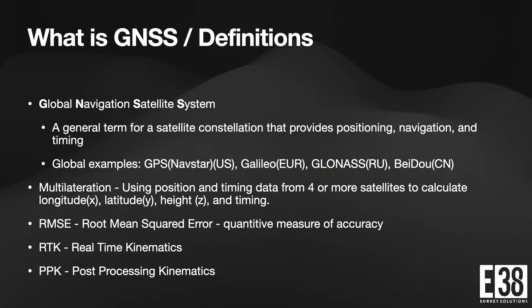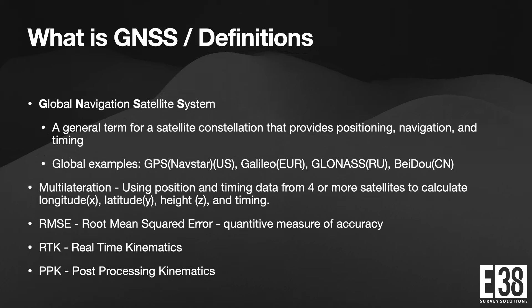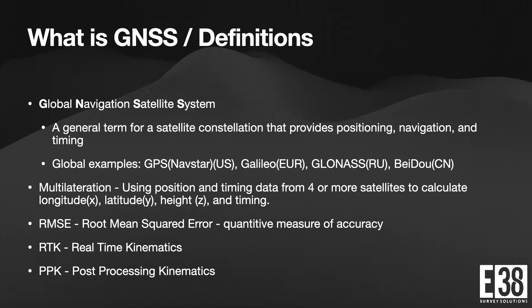Global Navigation Satellite System, or GNSS, is a general term for a constellation of satellites that provide positioning, navigation, and timing. There are several constellations in orbit now, some for specific regions of the globe, and four major global constellations created by the US, the EU, Russia, and China. By name, those are GPS, Galileo, GLONASS, and Baidu, respectively.